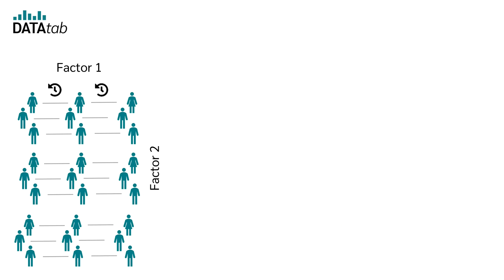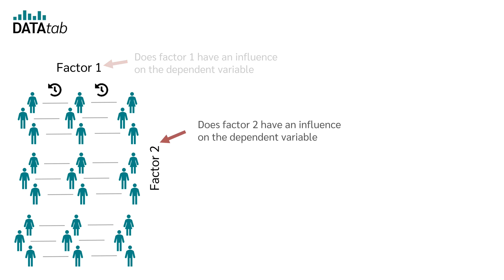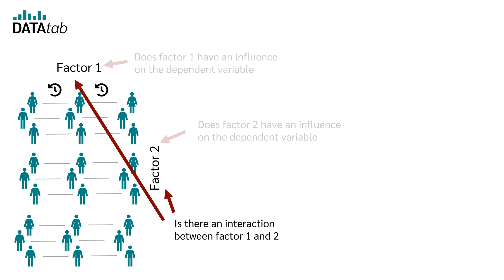With the two-factorial analysis of variance with measurement repetition, you can answer three things. First, whether the first factor with the measurement repetitions has an influence on the dependent variable. Then, whether the second factor has an influence on the dependent variable. And finally, whether there is a so-called interaction effect between the two factors.